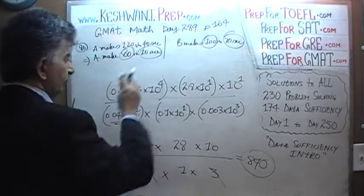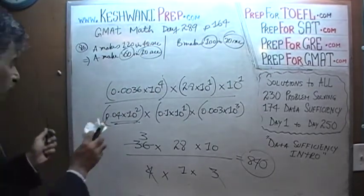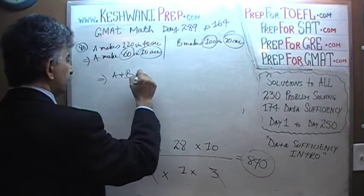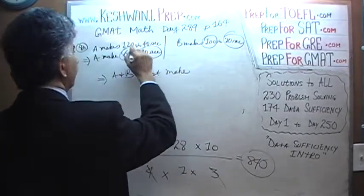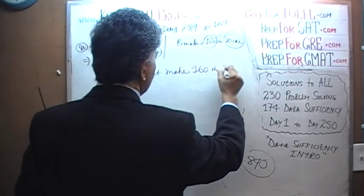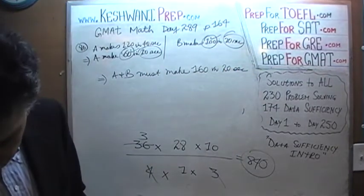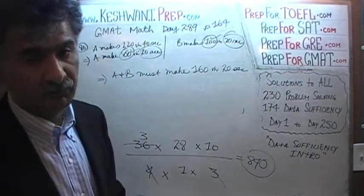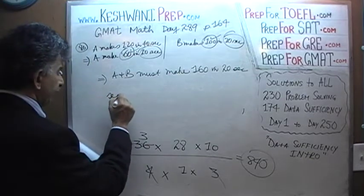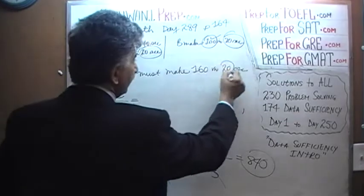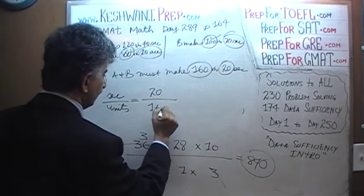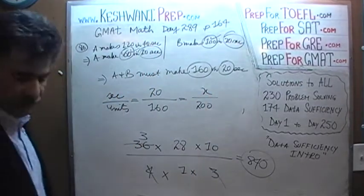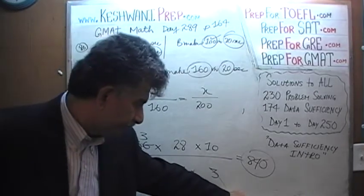Therefore A and B together make 60 plus 100, which is 160 units in 20 seconds. The question is: how many can they make in 200 seconds? That's a simple proportion problem. We set it up: in 20 seconds they make 160 units. We cross-multiply and solve for X to find how long it takes them to make 200 units.